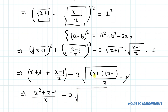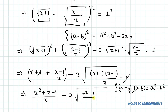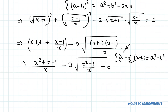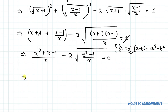We know the identity (a+1)(a−1) = a²−1, so root under (x+1) times root under (x−1) equals root under (x²−1). This gives us (x²+x−1)/x minus 2·root under (x²−1)/x equals 0. Taking the radical term to the right-hand side, we have (x²+x−1)/x equals 2·root under (x²−1)/x.